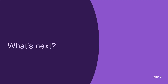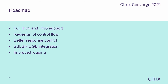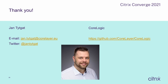To end my session, I'd like to go over some things on the roadmap. We have full IPv4 support, but IPv6 isn't supported yet because it requires a tremendous amount of code to handle all IPv6 subnets — so we're including that. We'll also redesign the control flow you saw in the binding of content switching policies, because we found some design flaws when binding responder policies directly on load balancing virtual servers, as they precede the responder policies bound to content switching virtual servers. We also want to allow for better response control — making the drop or reset behavior more granular. My name is Jan Tijdgat. If you have any questions, reach out via email or Twitter, and if you want to take a look at CoreLogic, the link is on the right hand side. Thank you very much for joining, and I hope to see you next time.